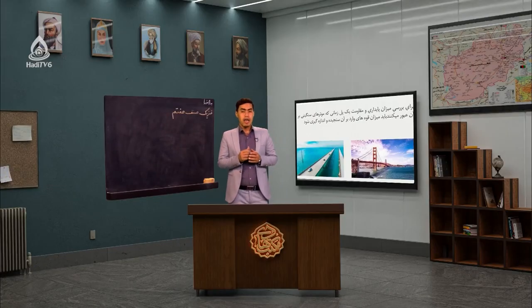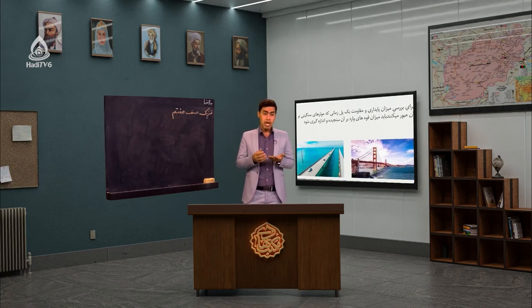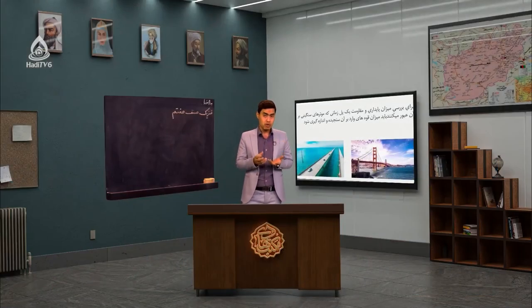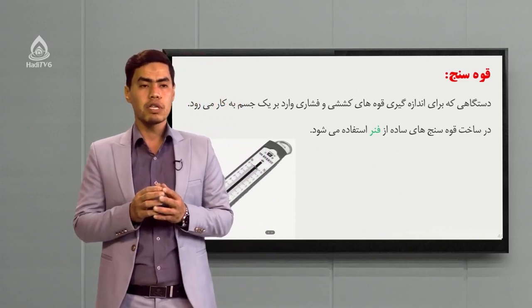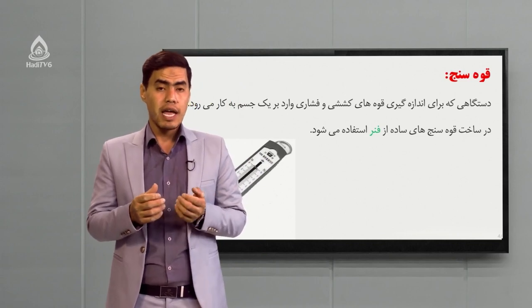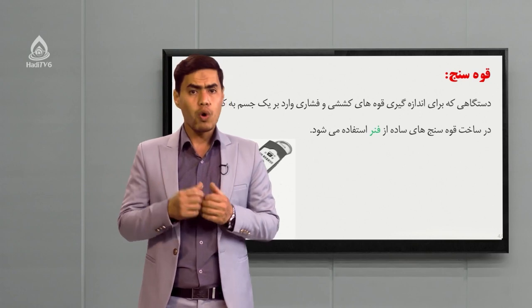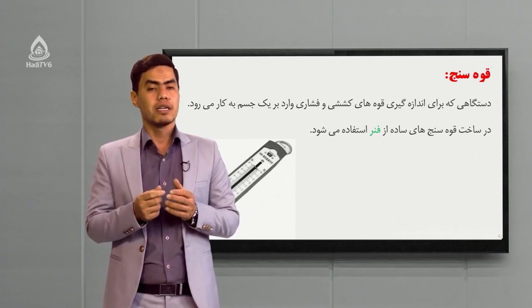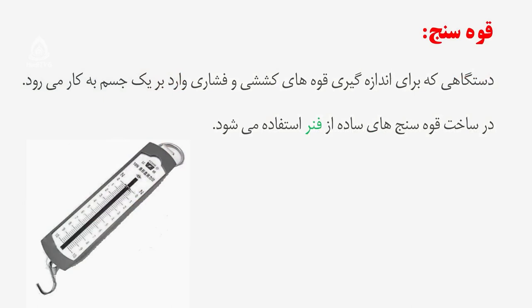وقتی که میخواییم یک پل بسازیم و مقاومت و پایداری آن را بسنجیم تا وقتی مترا از روی پل رد میشن پل ریزش نکنه، باید قوه‌هایی که بر این پل وارد میشن اندازه‌گیری کنیم. برای اندازه‌گیری قوه از یک وسیله استفاده میکنیم به نام قوه‌سنج. قوه‌سنج وسیله‌ایست که قوه‌های فشاری یا کششی بر یک جسم را اندازه‌گیری میکند. ساده‌ترین نوع قوه‌سنج در ساختش از فنر استفاده میشه.